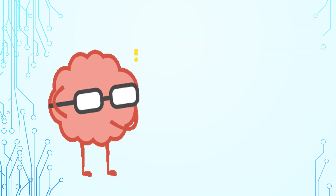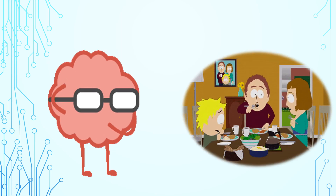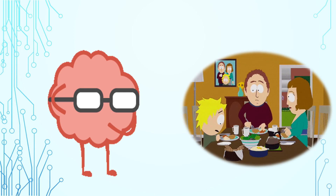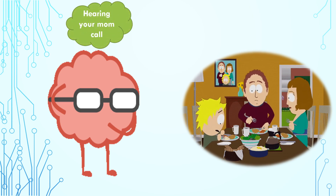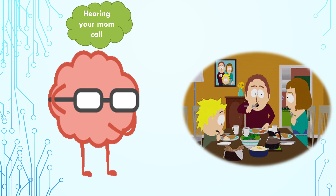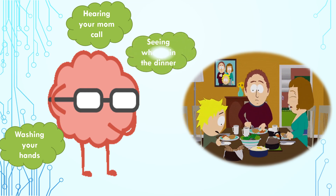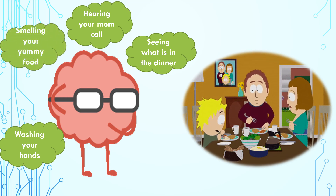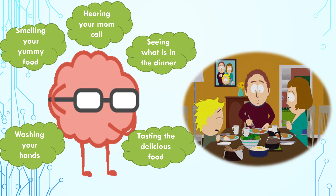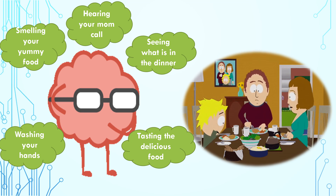Let's take an example that your mother called you for dinner. What would be the response to that from your brain and body? Let's see! First of all, you will be hearing your mom's call. Then you will be washing your hands. Then you will see what is in the dinner. And then you will smell your delicious food. And finally, you will taste the delicious food and say thank you to your mommy. So, how are we doing all these things? We are using our senses to do all these things.